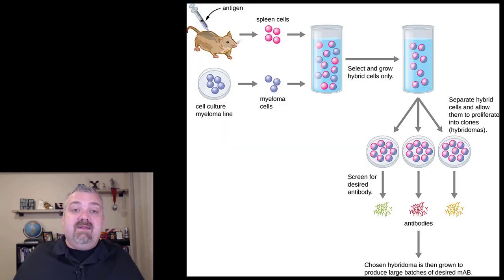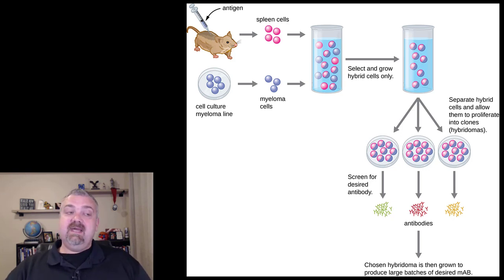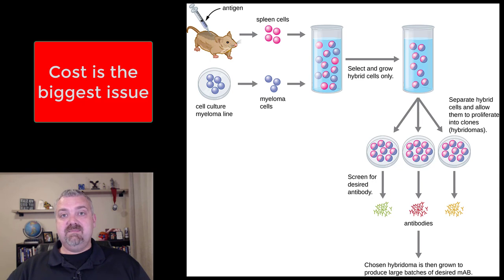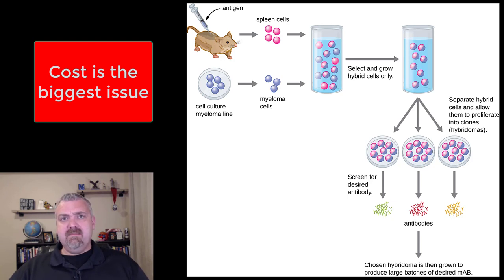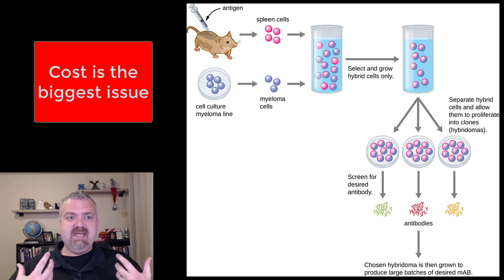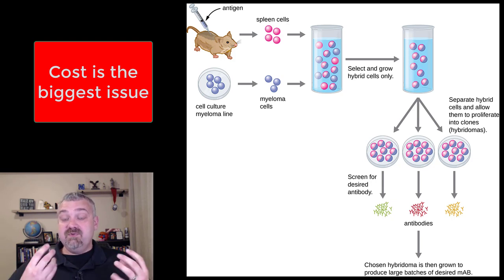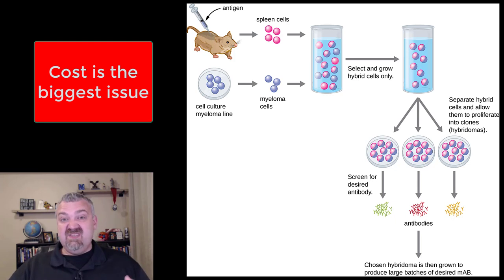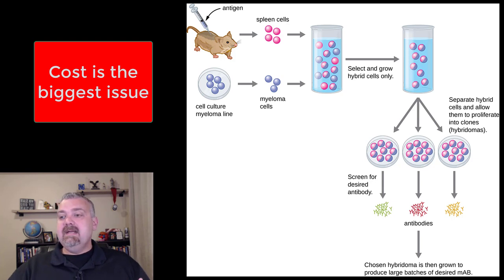Back to our hybridoma page — where's the downside? The biggest issue right now is cost. They're super expensive. I would be paying at least $5,000 a month out of pocket for my monoclonal antibody drug if it wasn't for insurance. That's because it can take weeks to produce liters of fluid to get the monoclonal antibodies needed just for my doses of Humira. The biggest downside right now is that it's very time-consuming, which means it's very expensive.